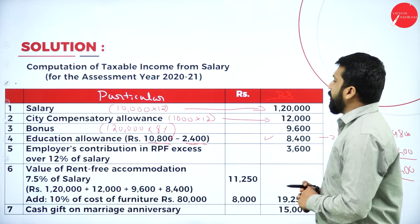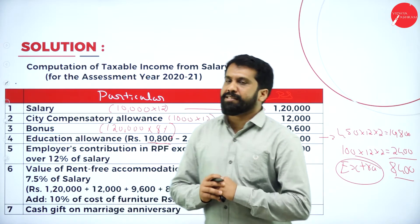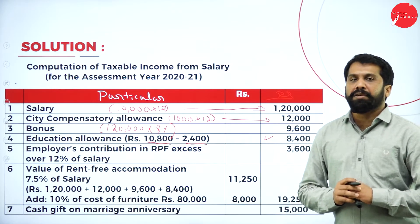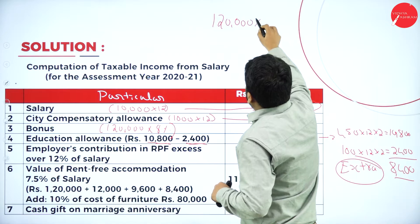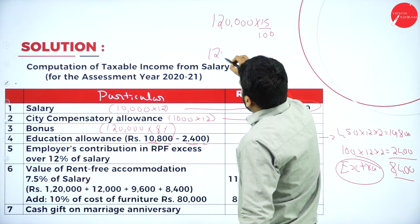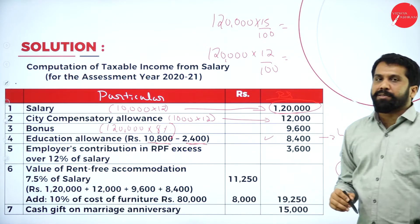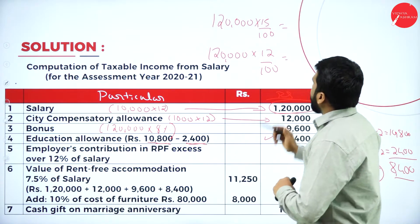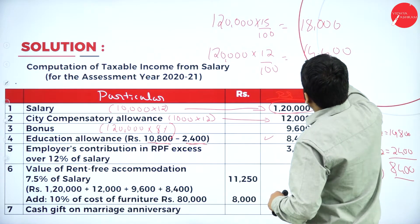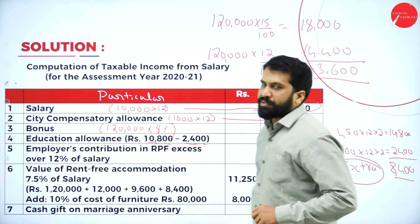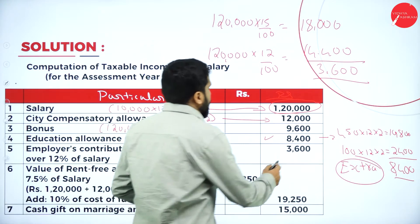Employer's contribution to RPF — excess over 12% of salary. There is no DA in this problem, so basic salary is 1,20,000. Calculate 15%: 1,20,000 into 15% equals 18,000. The limit is 1,20,000 into 12% equals 14,400. The difference — 3,600 — is taxable. That's why you get 3,600.